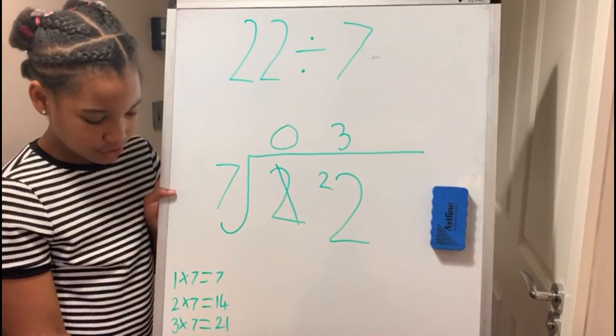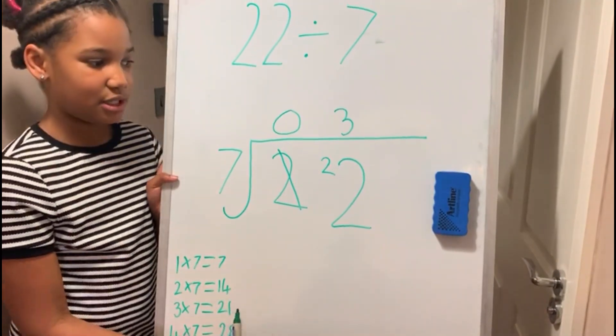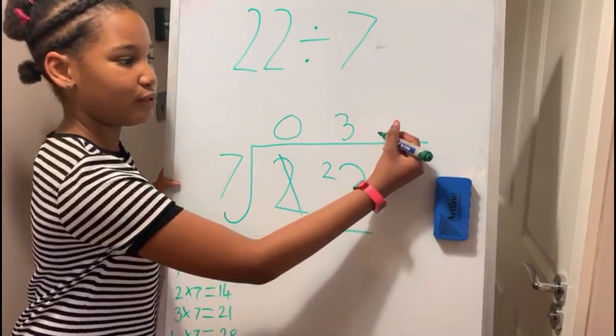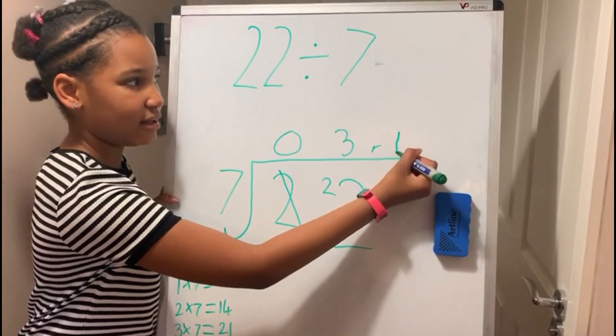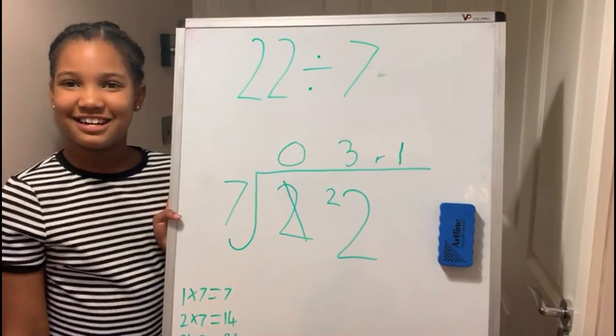And how many more numbers do you need to get from 21 to 22? 1. So you write an R for remainder and you write 1. Here's your answer.